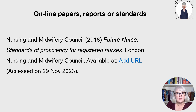For online papers, reports, or standards, start with the name of the corporate or professional body as the author — for example, Nursing and Midwifery Council — then the year in brackets, the title in italics, a full stop, the place of publication if available, a colon, and the publisher if available. You then need a URL link: 'Available at:' with a semicolon, the web address, and then 'Accessed on:' with the date in brackets and a full stop.